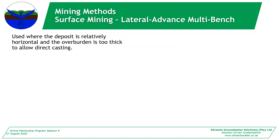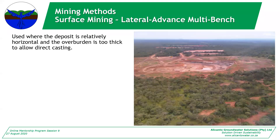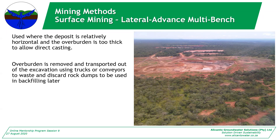Lateral advanced multi-bench mining is where your deposit is still relatively horizontal but the overburden is too thick to allow direct casting. For example, at this mine you start at the top of the hill and strip down going in a direction. Because the overburden was too thick for strip mining, you remove your overburden, transport it out of the pit and place it on a temporary waste rock dump to rehabilitate at a later stage — so it's not concurrent rehabilitation.